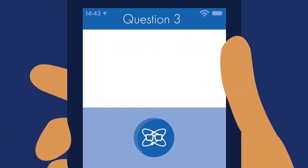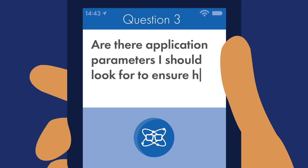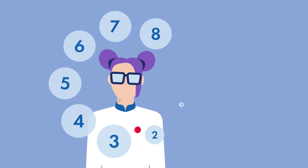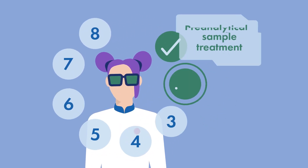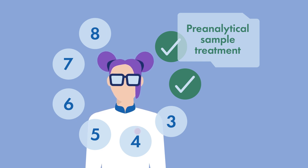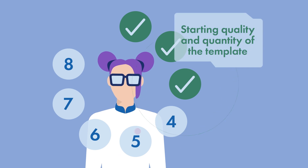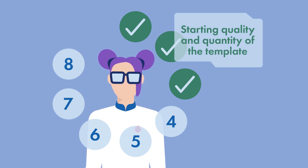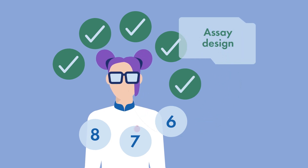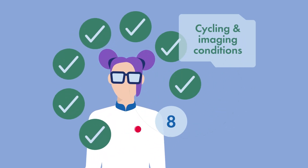Question 3: Are there application parameters I should look for to ensure high dPCR data quality? Yes. Protocols and reagents, pre-analytical sample treatment — for example, restriction enzyme digest when using gDNA as template material — and the starting quality and quantity of the template, sample dilution, assay design, reaction setup, and cycling and imaging conditions.